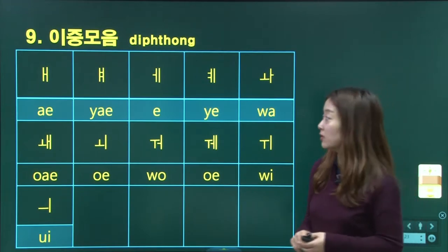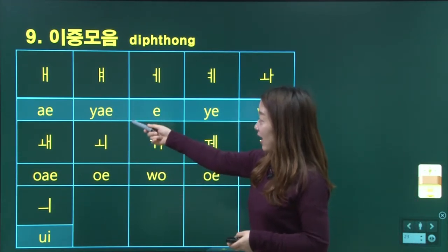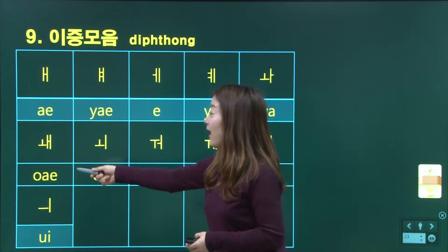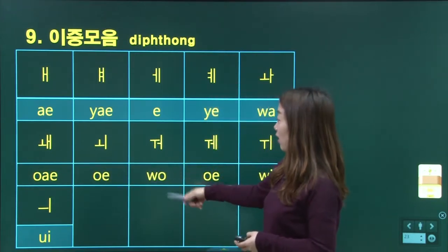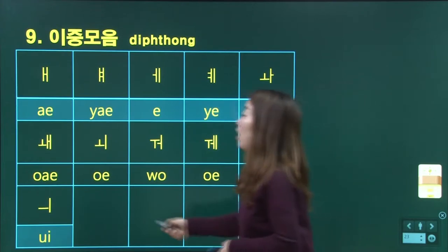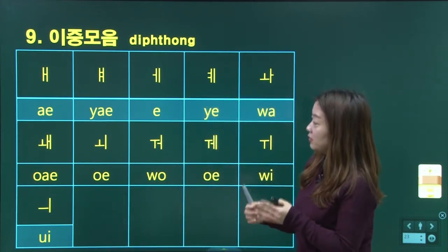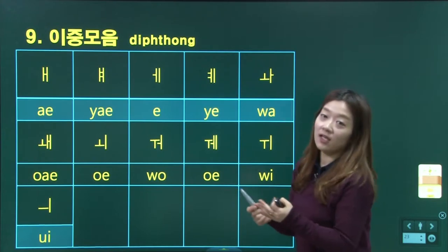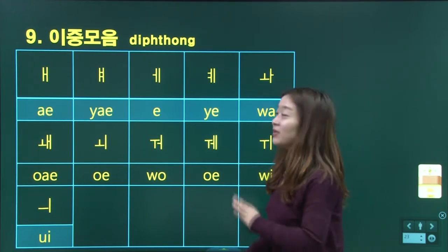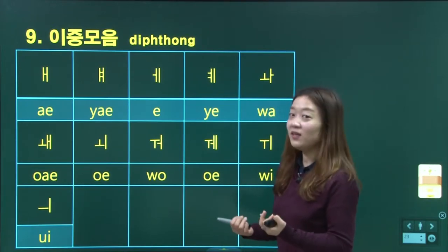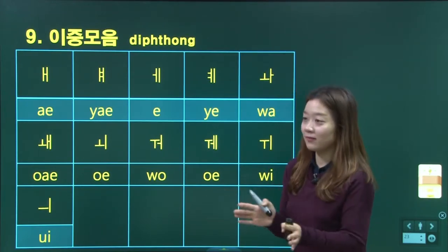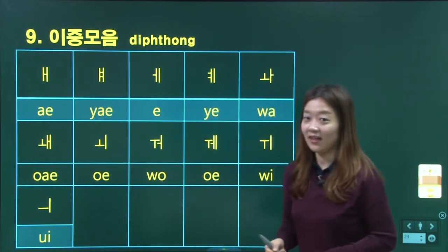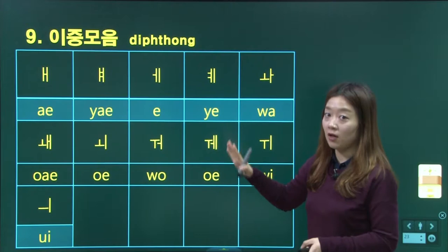Diphthongs mean double vowels. Some just sound the same. If you feel a little bit confused, it's because some sounds are just the same, but we can use a different way to write them — okay, for the spelling — but they sound really similar. For me, I cannot compare 아 and 아, or 외 and 왜. You just need to know these are the diphthongs.